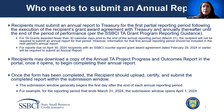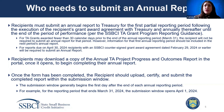The annual TA project progress and outcomes report template will be available in the portal once it opens for submission. Once the form has been completed, you should upload, certify, and submit the report within the submission window. This window generally begins the first day after the end of each reporting period and is open for 30 days. The submission window for the reporting period ending March 31st, 2024 will open on April 1st, 2024.